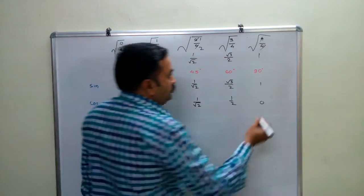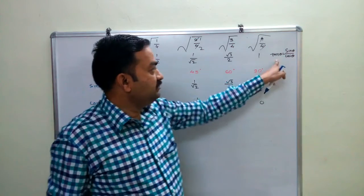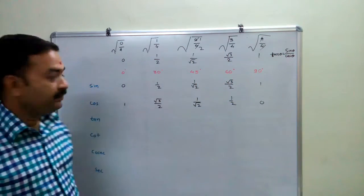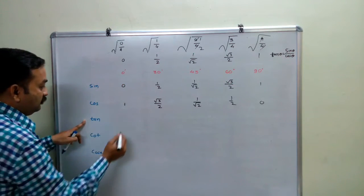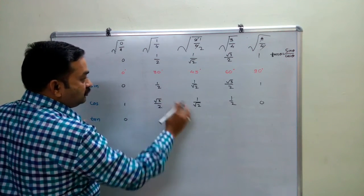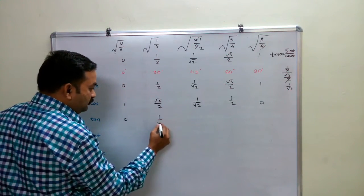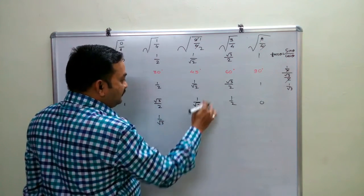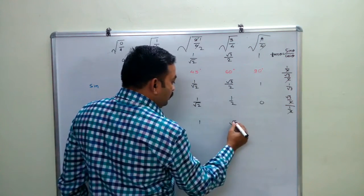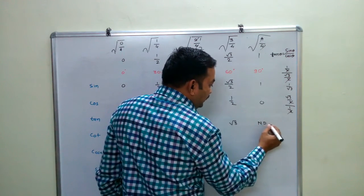Now for tan. You must know the formula: tan theta equals sin theta upon cos theta. So the value of tan is the ratio of sin to cos. So tan 0° = 0/1 = 0. Then 1/2 divided by √3/2 gives 1/√3. Then 1/√2 divided by 1/√2 — these cancel — giving 1. Then √3/2 divided by 1/2 gives √3. And 1 divided by 0 is not defined.